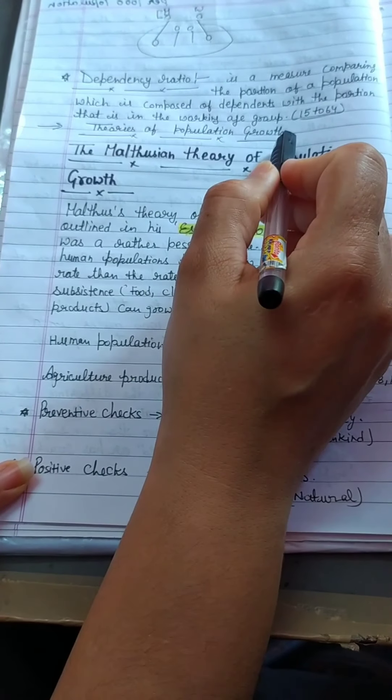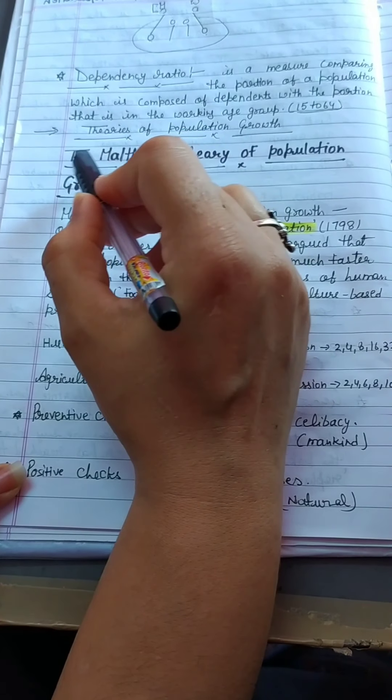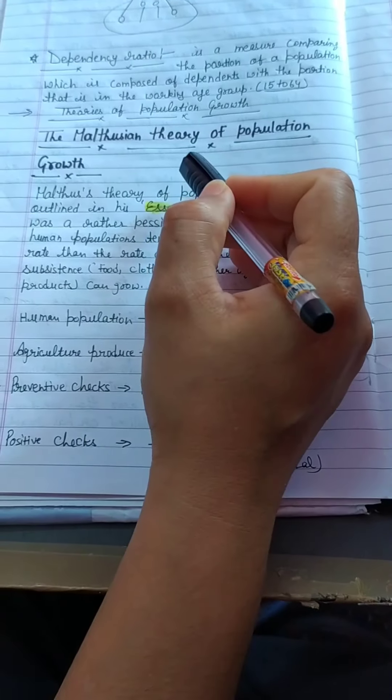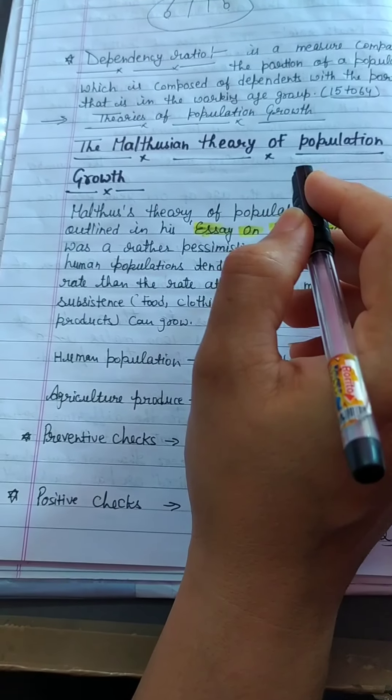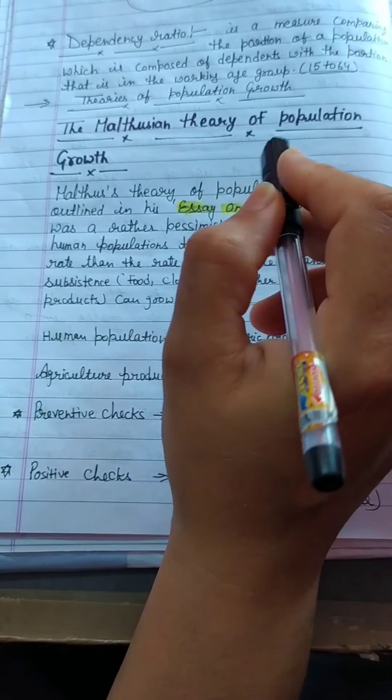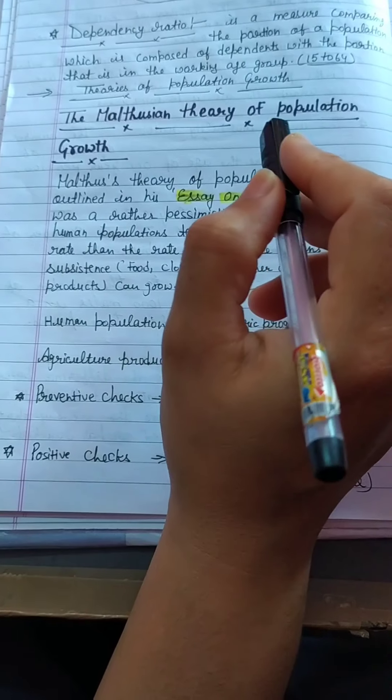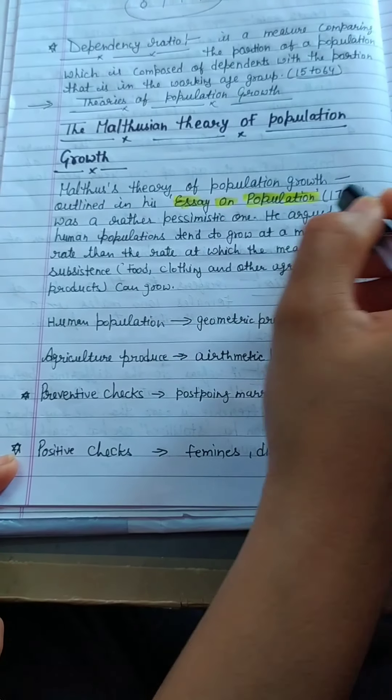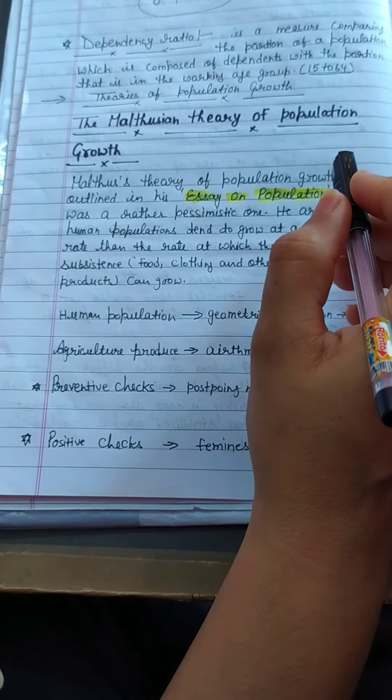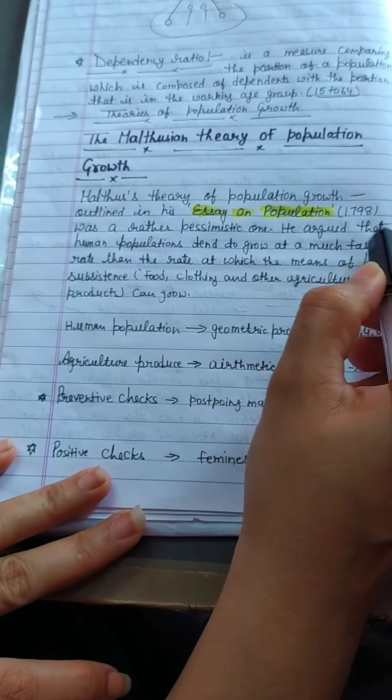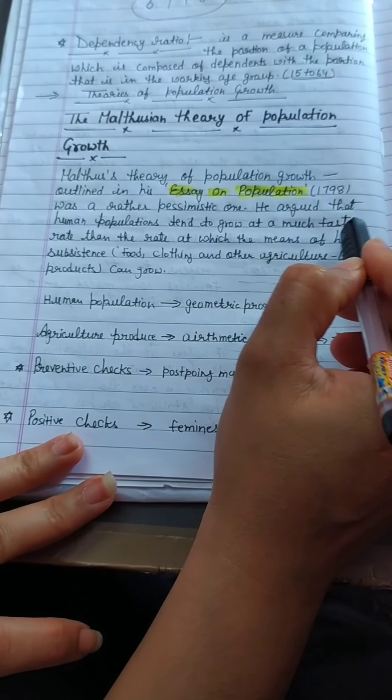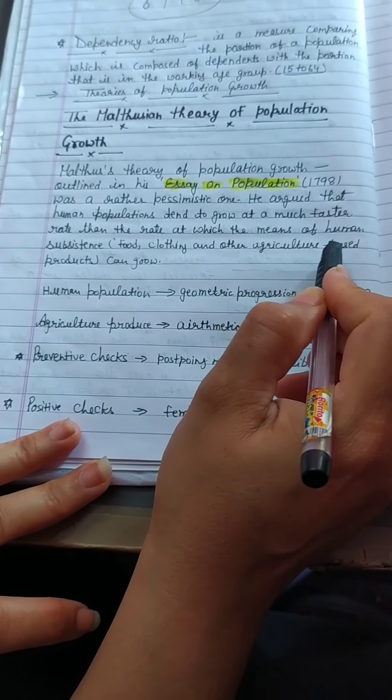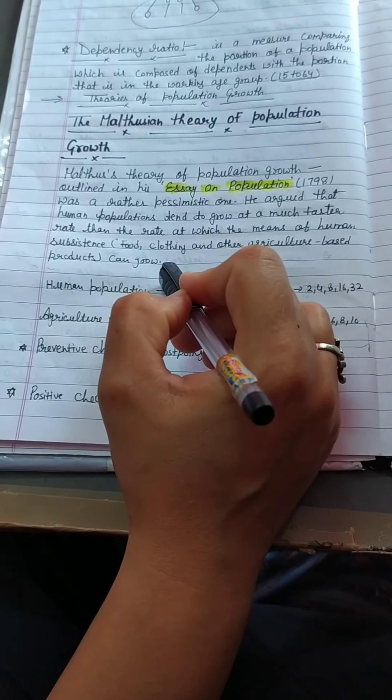Now we are studying the theories of population growth. The first and important theory is the Malthusian theory of population growth. Before discussing the theory, we will know something about Malthus. His full name is Thomas Robert Malthus. He is an English political economist and professor of history and political economy at the East India Company College in London. His theory of population outlined in his book, Essay on Population, 1798. His theory has a negative aspect.